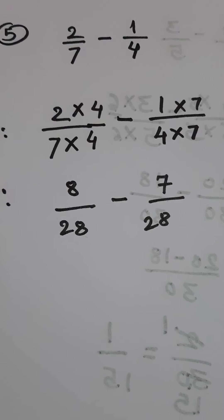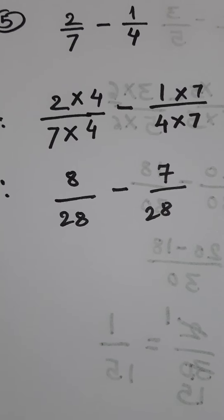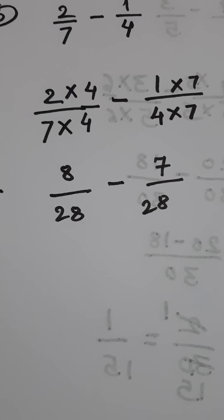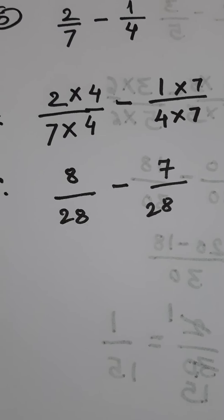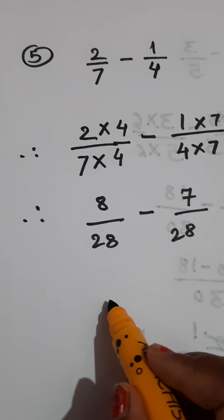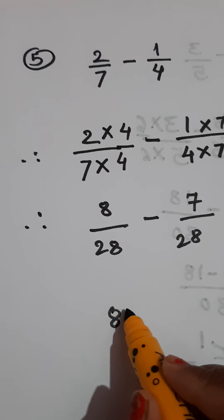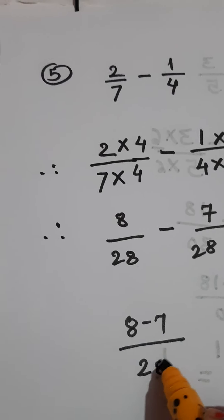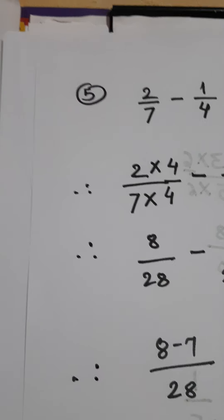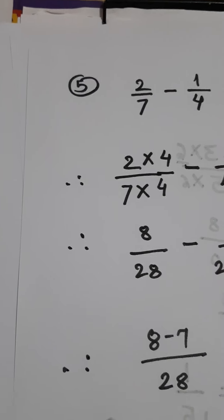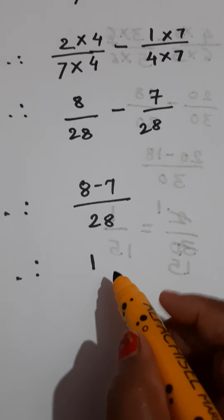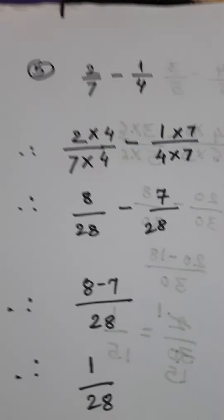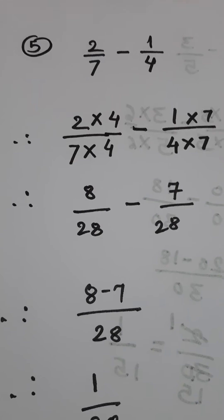Therefore: 2 fours are 8, 7 fours are 28, minus 7 ones are 7, 4 sevens are 28. Here we got like fractions having equal denominators, and now our work is easy. Subtract 8 minus 7 and give the common denominator 28. 8 minus 7 is 1, so 1 upon 28. This is the answer of this subtraction.